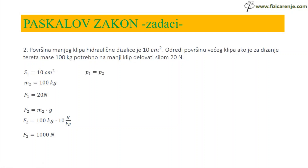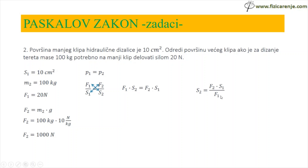Prvo ću izjednačiti pritiske: P1 je jednako P2. Umjesto P1 pišem F1 kroz S1, umjesto P2 — F2 kroz S2. Unakrsnim množenjem dobijam F1 puta S2 je jednako F2 puta S1. Iz ovog obrasca treba da dobijem koliko je S2. F1 je sa ove strane množilo, kada pređe na drugu stranu delit će, pa ću dobiti da je S2 jednako F2 puta S1 kroz F1. Umjesto F2 pišem 1000 N, S1 je dato u zadatku — 10 cm².